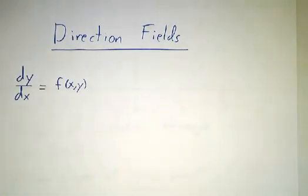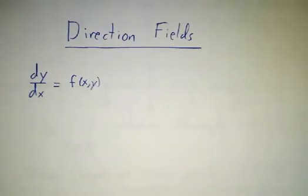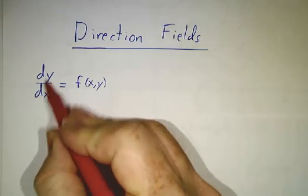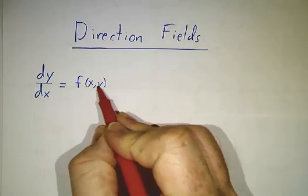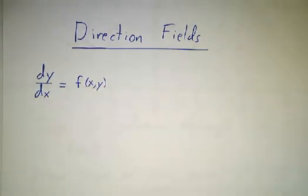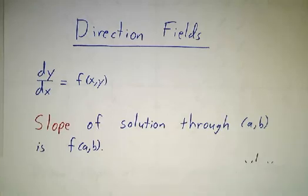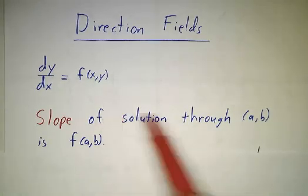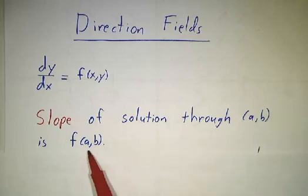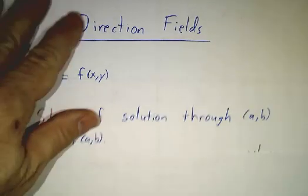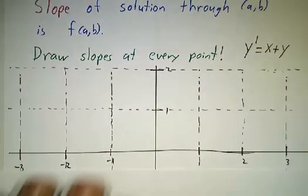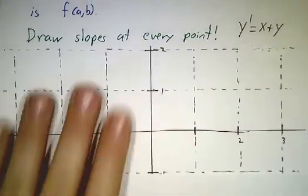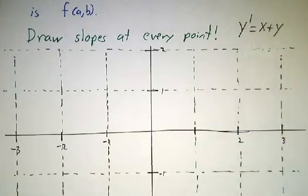So let's suppose somebody gives us a differential equation — in other words, they give us a formula for dy/dx as a function of x and y. That means that whatever our solution is, if it goes through the point (x, y), that solution has slope f(x, y). So let's draw a picture of all the possible slopes. In particular, let's do it for the differential equation dy/dx equals x plus y.